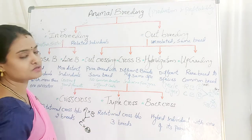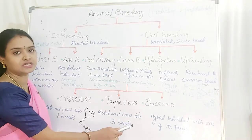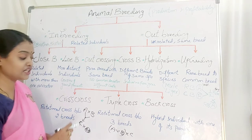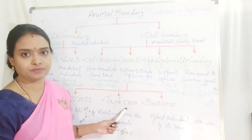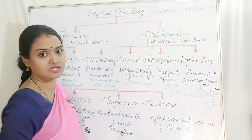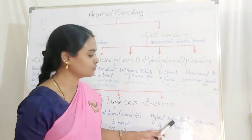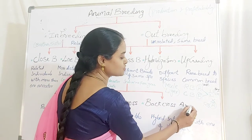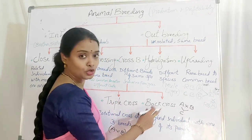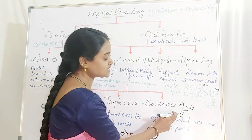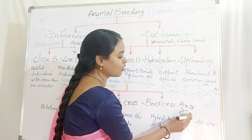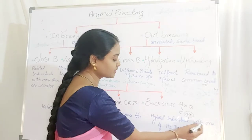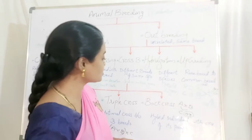In triple crossbreeding, it is a rotational cross between three breeds — A with B, then the progeny with C. Three breeds are involved. In backcross, the hybrid individual is mated with one of its parents. If A crossed with B gives offspring C, then C is backcrossed with either parent A or parent B. That is called backcross.